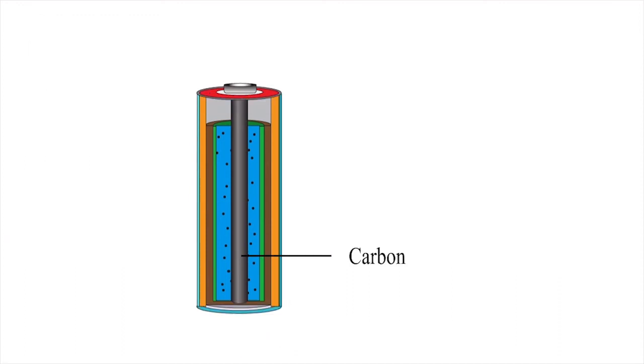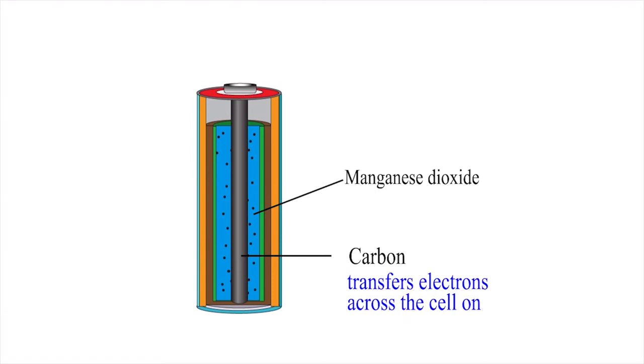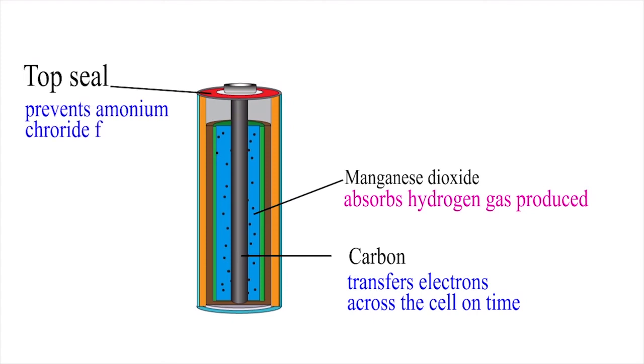Electrolyte, a mixture of carbon and manganese dioxide. Carbon transfers electrons across the cell all time. Manganese dioxide absorbs hydrogen that's produced. Top seal prevents ammonium chloride from drying up.